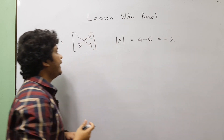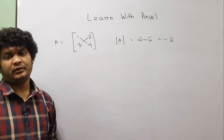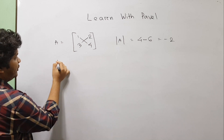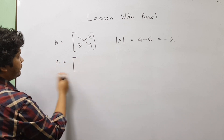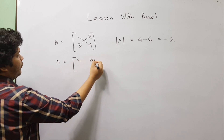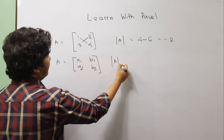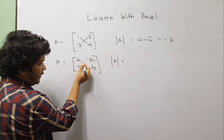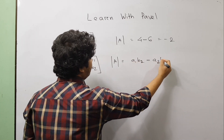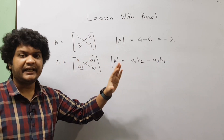So this is the minus 2-2 matrix. The most general formula: suppose A is equal to [a1, b1; a2, b2], so the determinant is a1*b2 minus a2*b1.